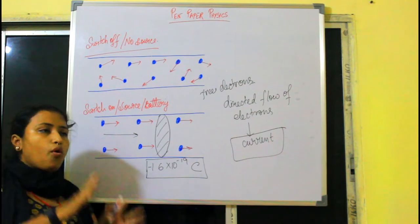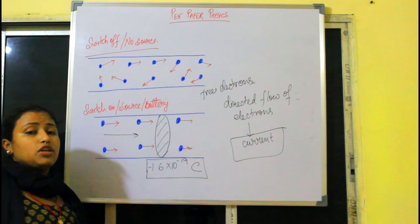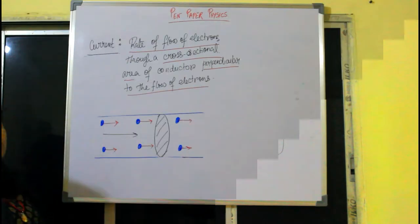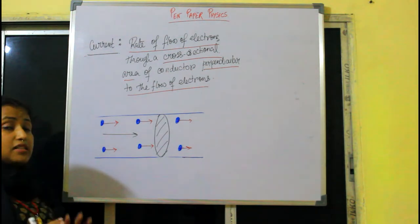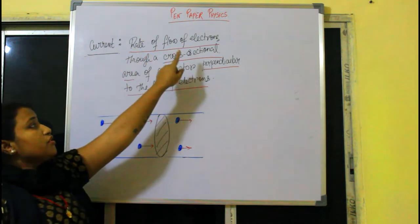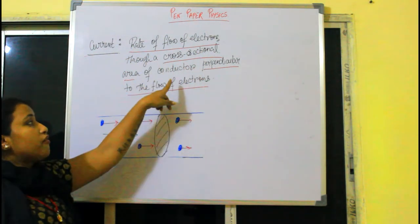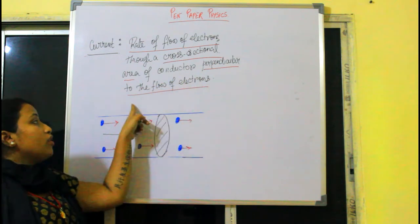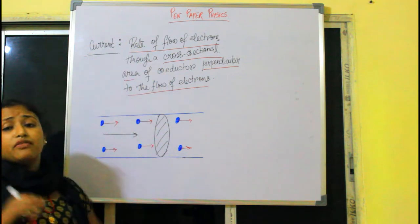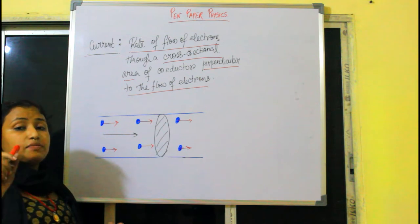Now let us go into the proper scientific definition of current. The final definition is: current is the rate of flow of electrons through a cross-sectional area of a conductor perpendicular to the flow of electrons. Whenever in physics we use the word 'rate', it means divided by time.